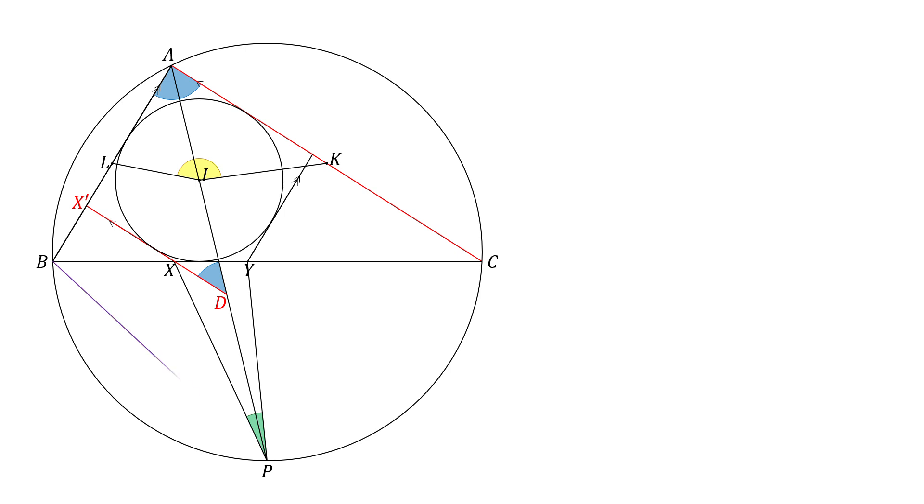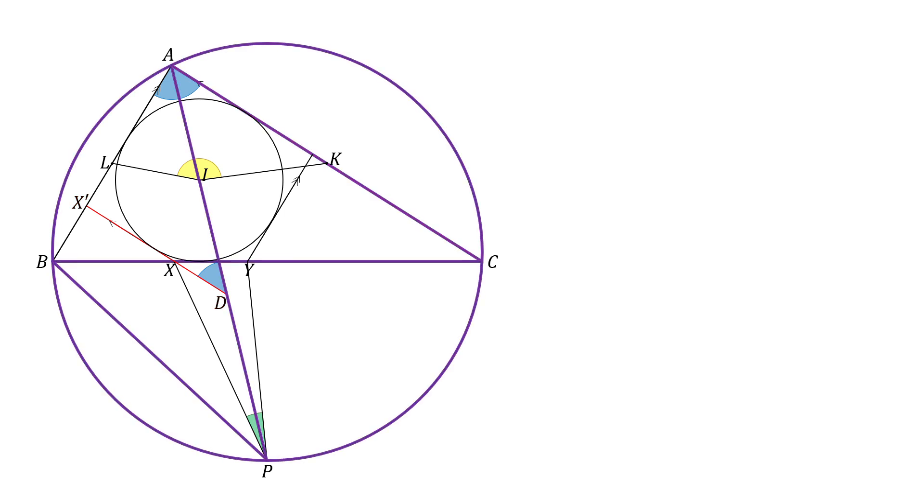Draw a line BP. In the circumcircle, the arc PC subtends angle PAC and angle PBC. The angles subtended by the same arc are equal. So angle PBX and angle ADX are equal.